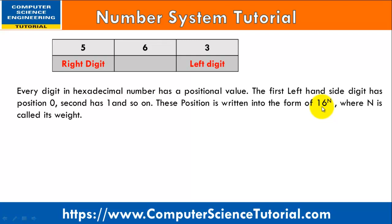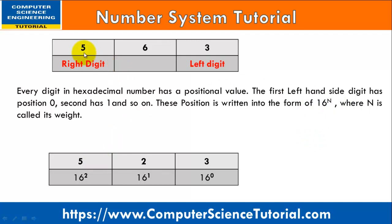We are learning the conversion process from hexadecimal to decimal, so we use base 16, and n is the positional value. This is called the weight of the hexadecimal digit. For example, our number is 523. The rightmost digit has positional weight 16 to the power 0, the next digit has weight 16 to the power 1, and the leftmost digit has weight 16 to the power 2. This weight is used to calculate the decimal value of any hexadecimal number.